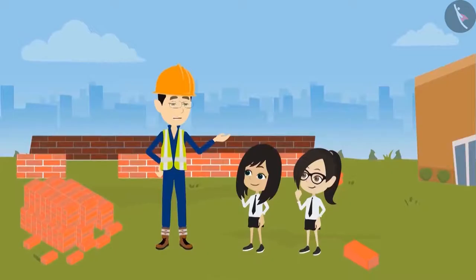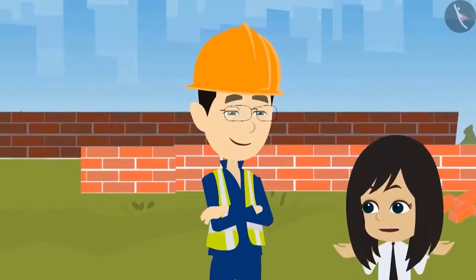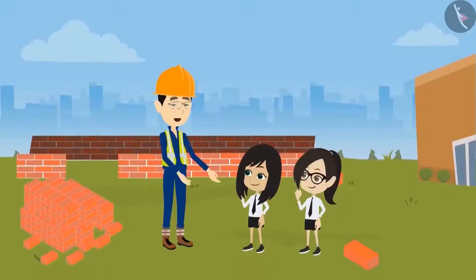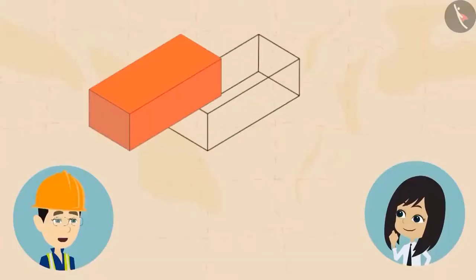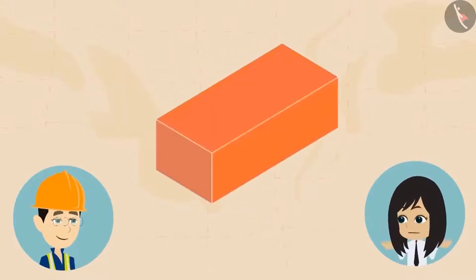Have you understood? Now we have understood. But here, all the bricks are of the same shape — are all bricks of the same rectangular shape? Yes, all bricks are of this shape — a rectangular box. In mathematics, this shape is called a cuboid. This brick has so many faces. Can we count them?